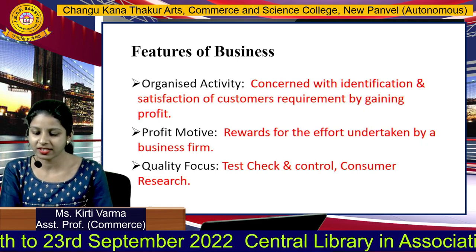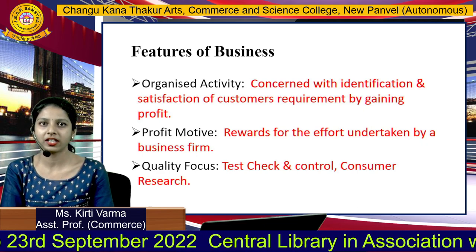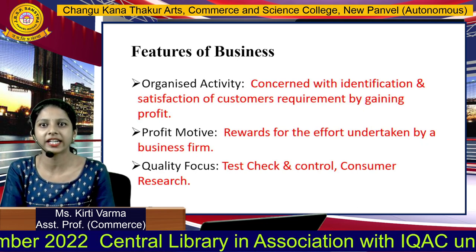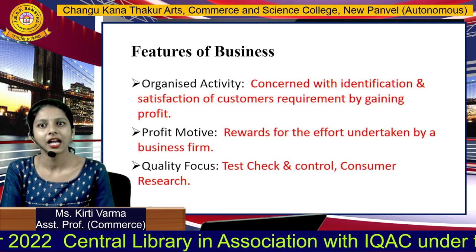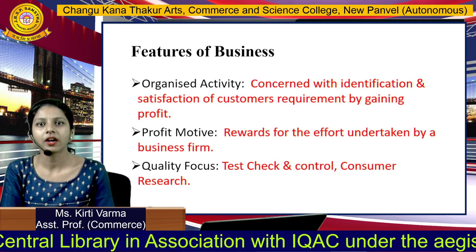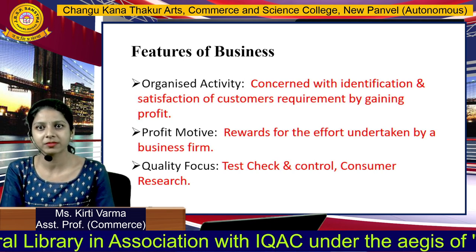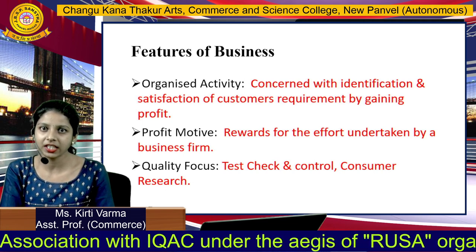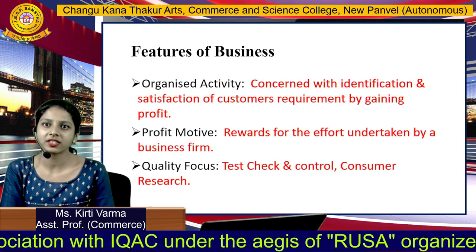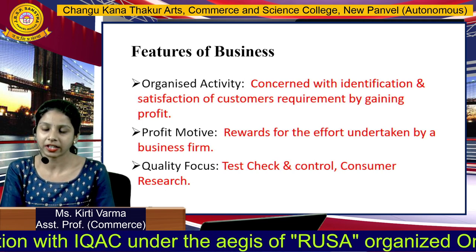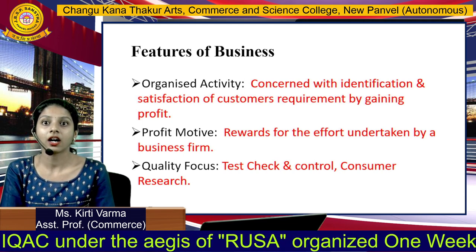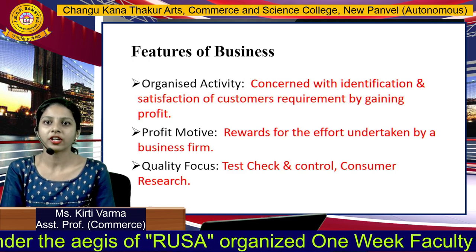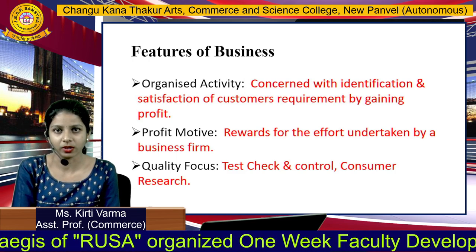What are the features of business? First, it is an organized activity. The main concern is to identify and satisfy customer requirements by gaining profit. It is a collective activity which involves every stakeholder directed towards a common goal.